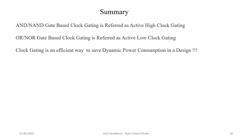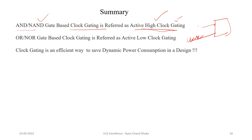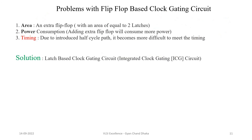A few points to summarize: the AND gate or NAND gate based clock gating is referred to as active high clock gating, because the clock will be passed from the gate when the enable signal is high. The clock signal will pass whenever the enable signal is high. If we have an OR gate or NOR gate based clock gating, it is referred to as active low clock gating. Clock gating is an efficient way to save dynamic power consumption in a design. Till now we discussed two clock gating circuits based on AND gate and OR gate, and in order to avoid glitches, we incorporated flip-flops.